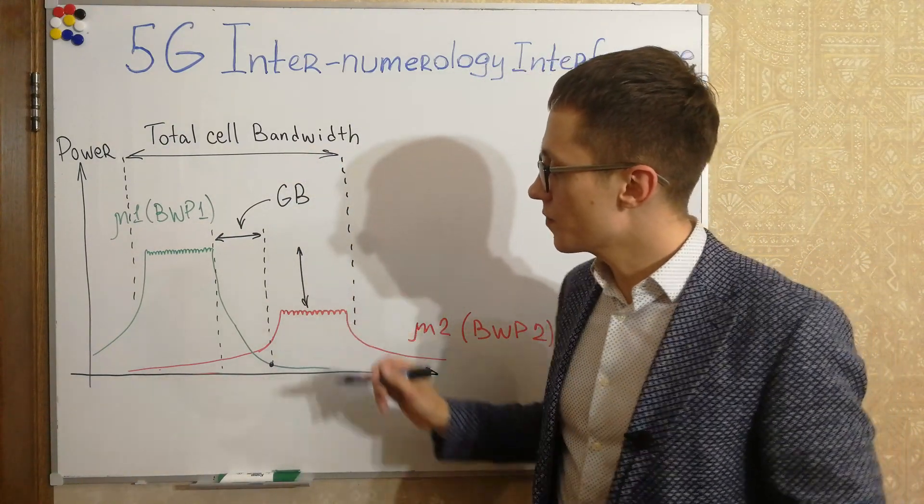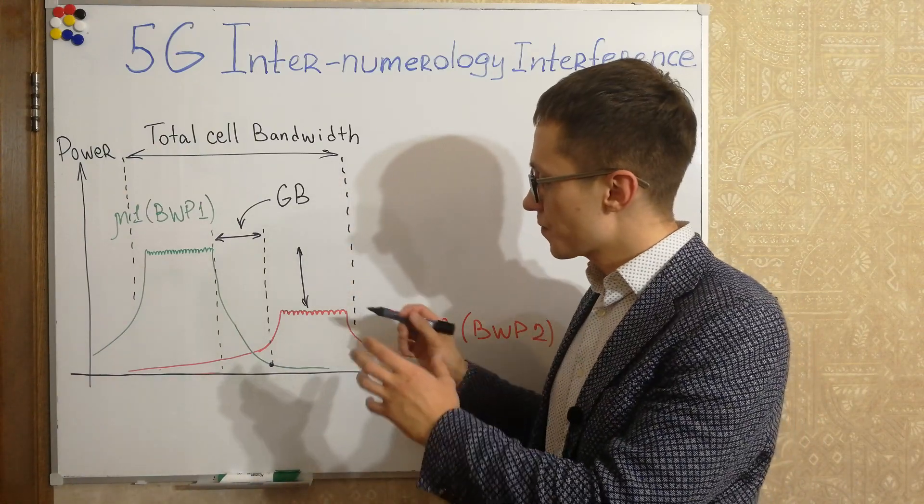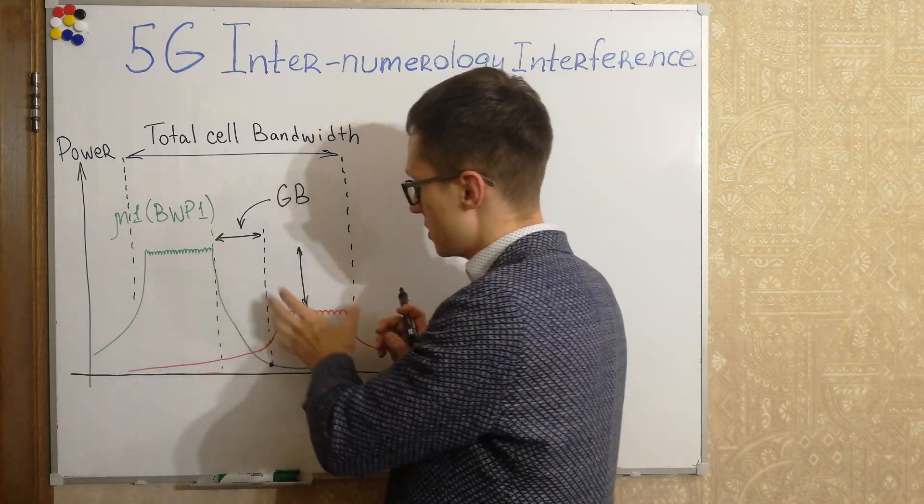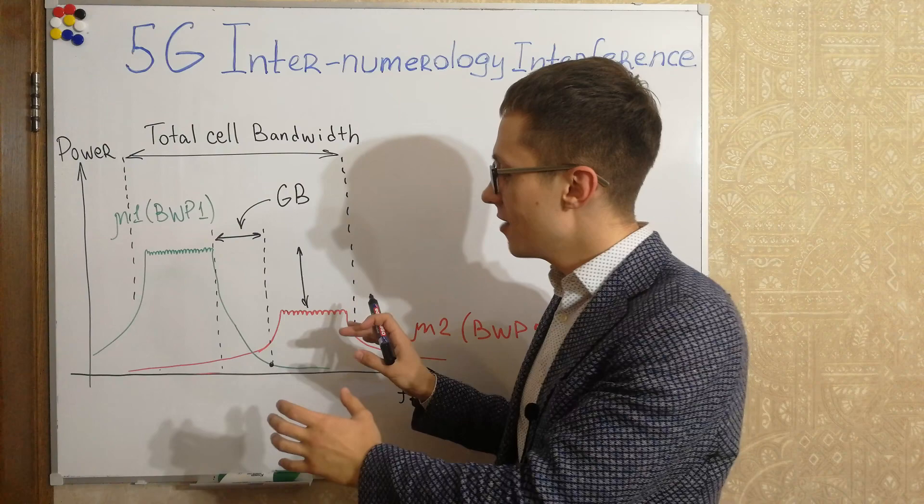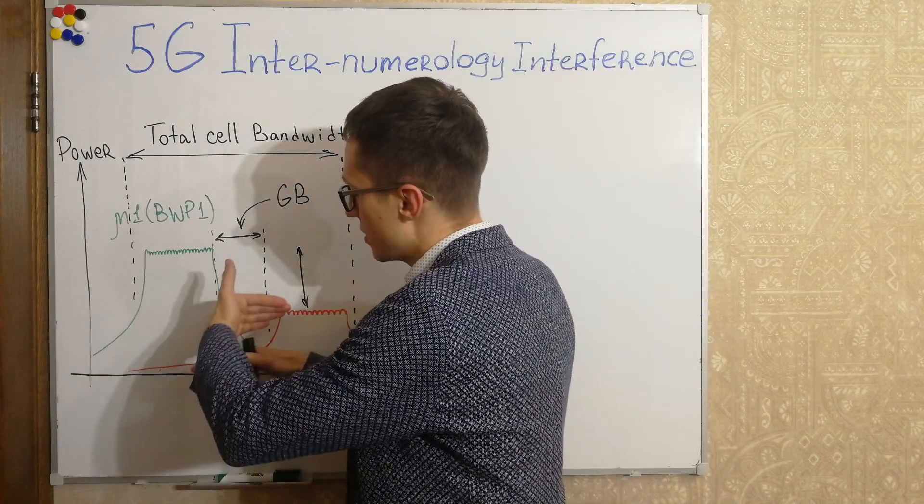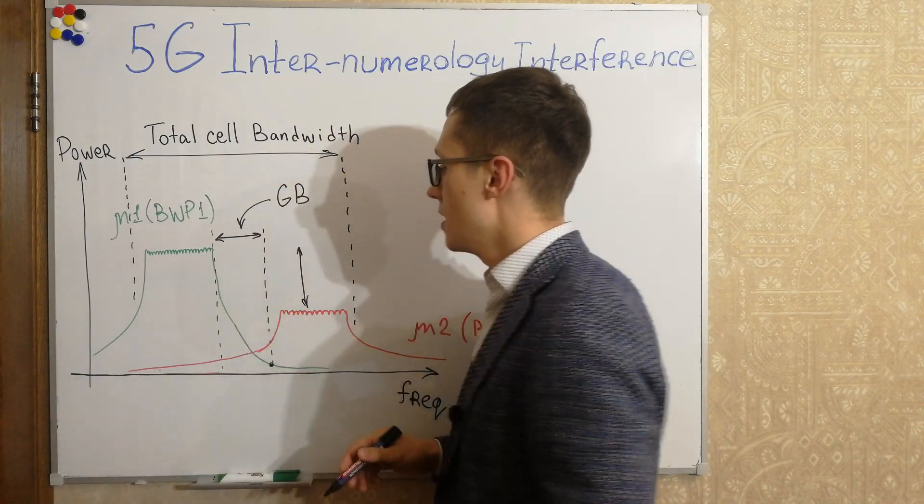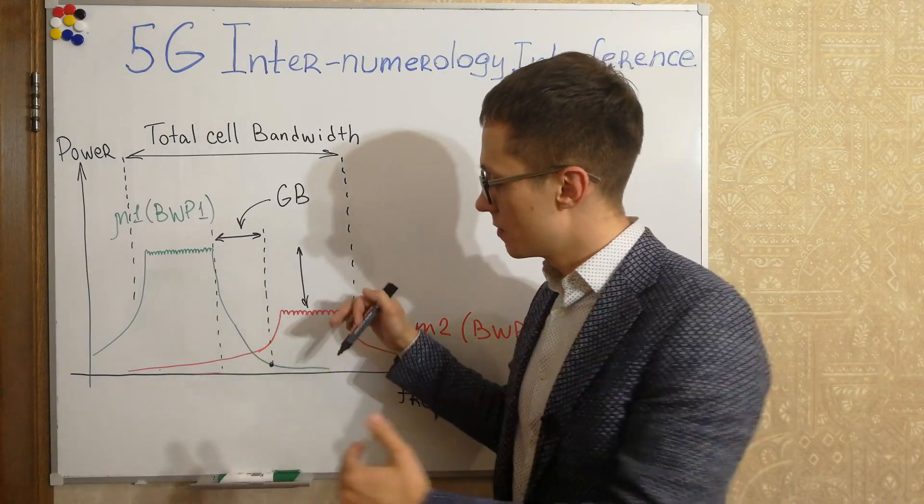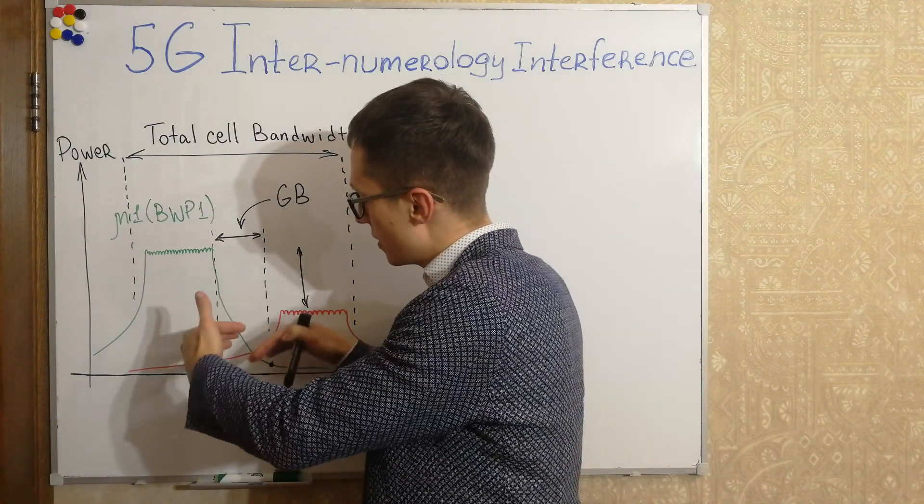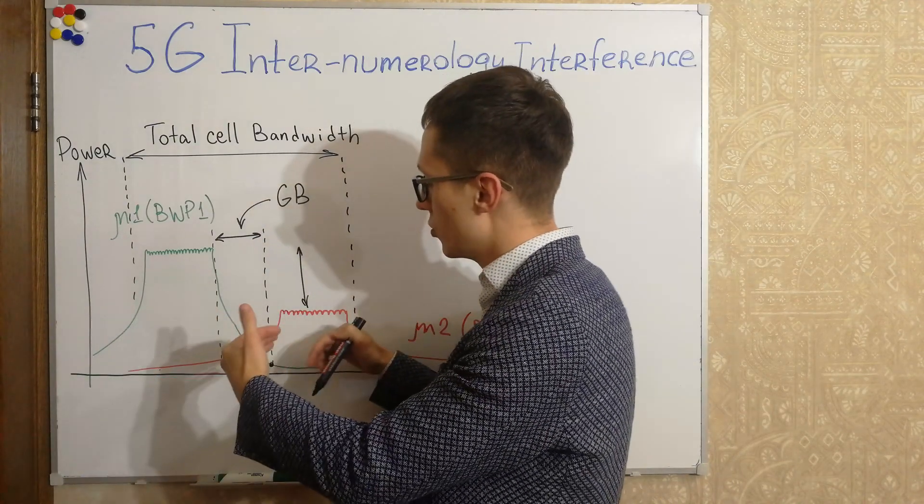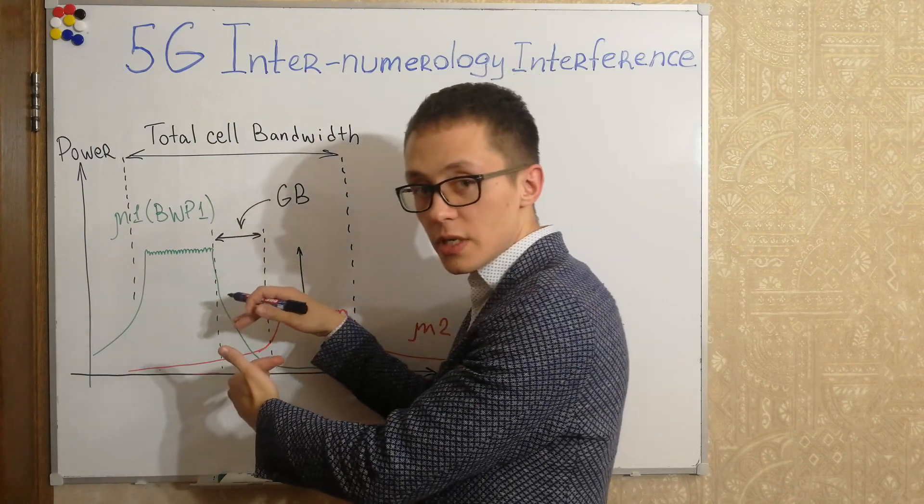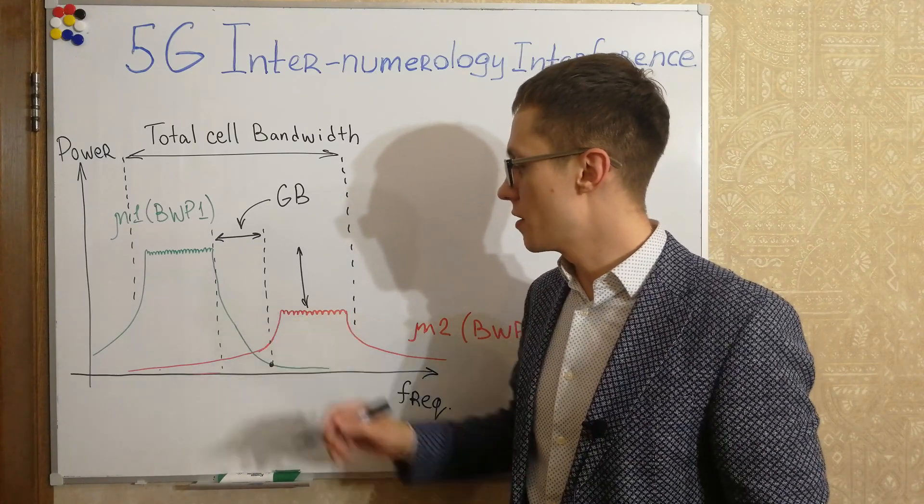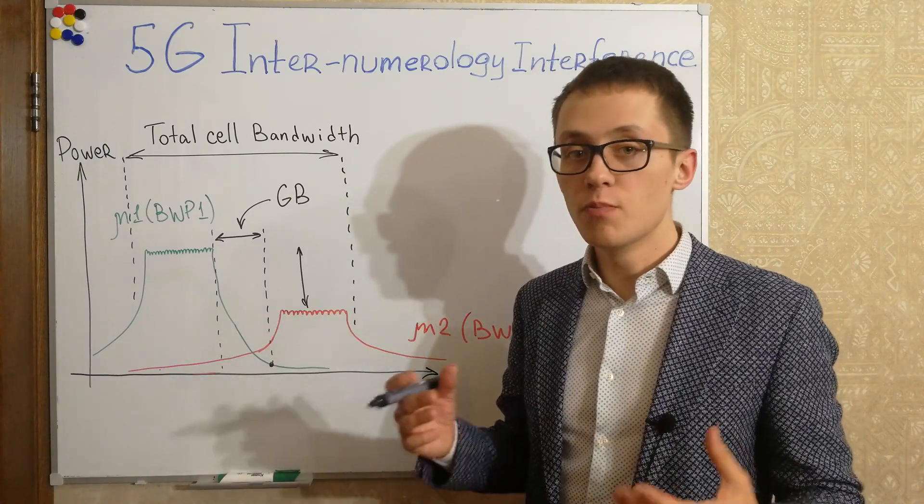As you can see, in reality this bandwidth part is not a rectangle. In reality there is an overlapping area every time and the question is how much this overlapping area is, because the more overlap here, the more influence, the more interference to each other they have, and this is very important.